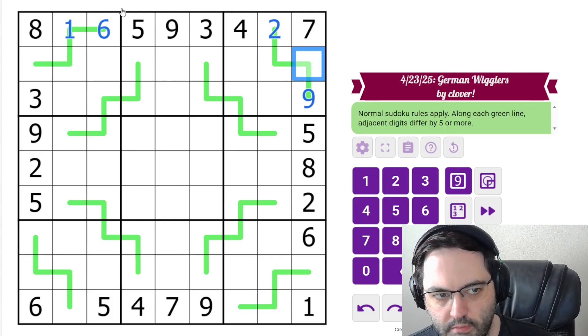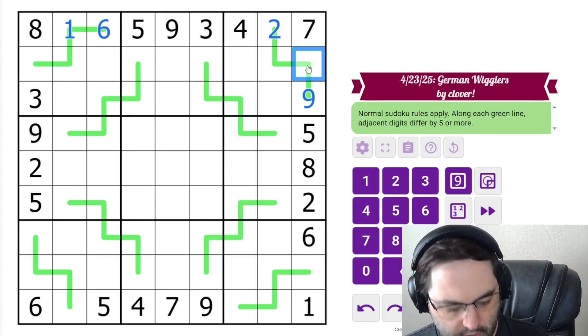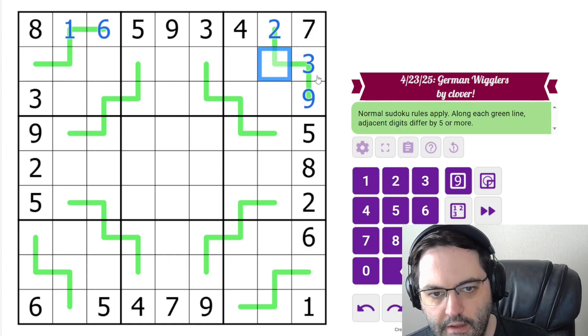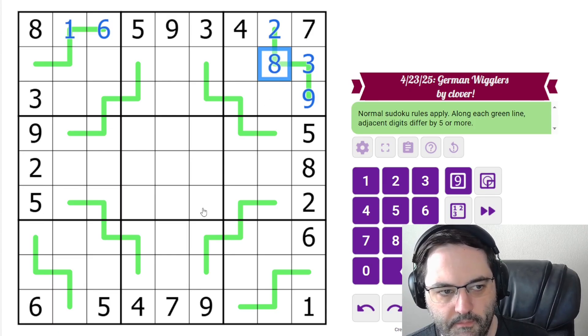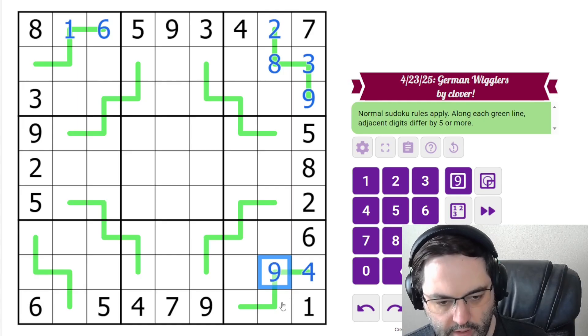Can it be 4? No. Same reason as the 6 up here, because these can't both be 9. So this is 3, and now the 3 needs an 8 next to it. So now this is 4, and that's just going to give us a 9 immediately.